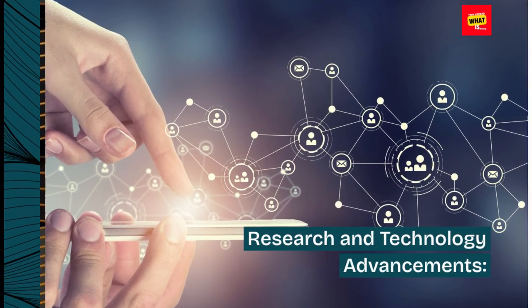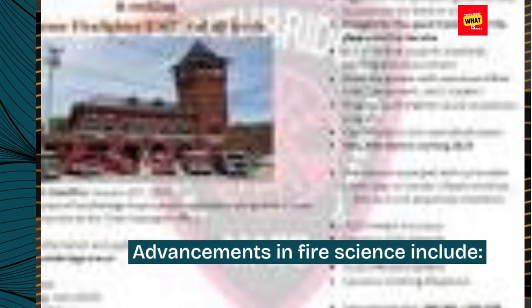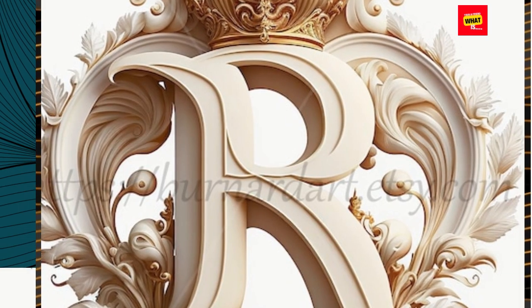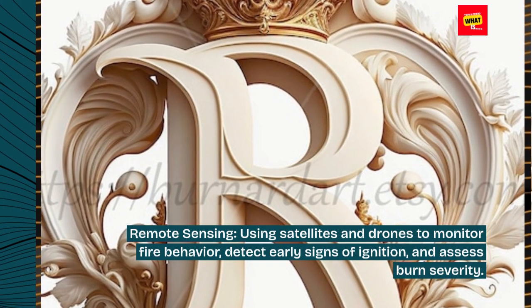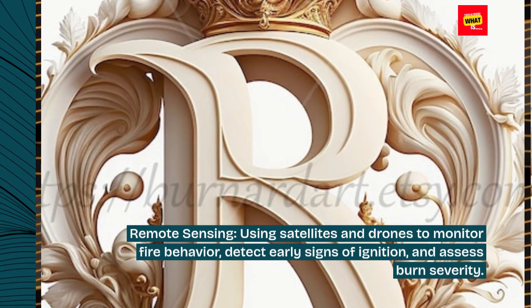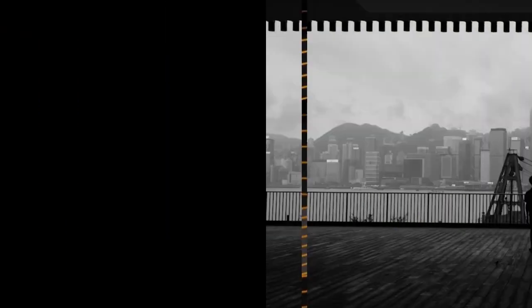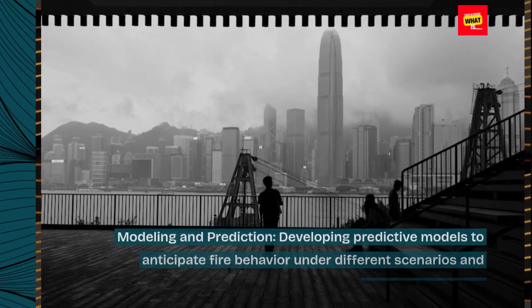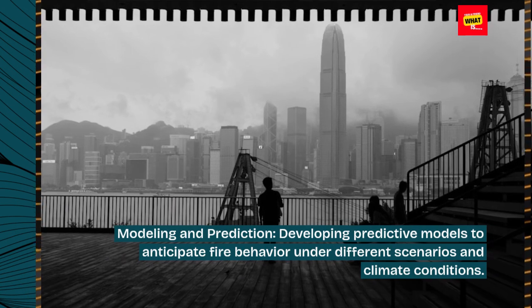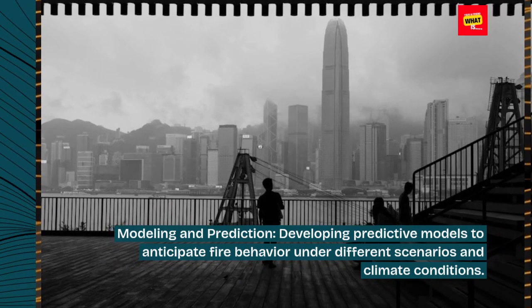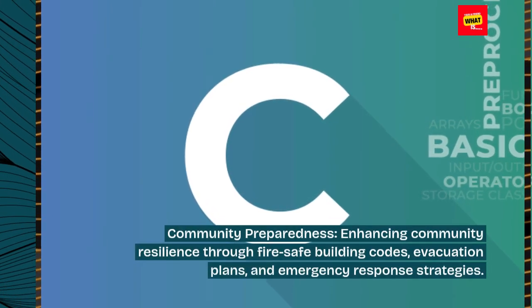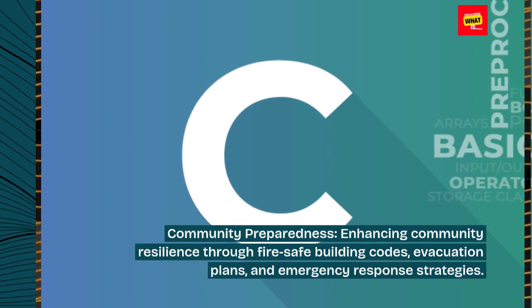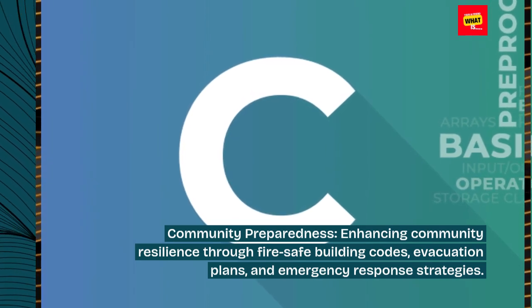Research and Technology Advancements: Advancements in fire science include remote sensing, using satellites and drones to monitor fire behavior, detect early signs of ignition, and assess burn severity. Modeling and prediction involves developing predictive models to anticipate fire behavior under different scenarios and climate conditions. Community preparedness focuses on enhancing community resilience through fire-safe building codes, evacuation plans, and emergency response strategies.